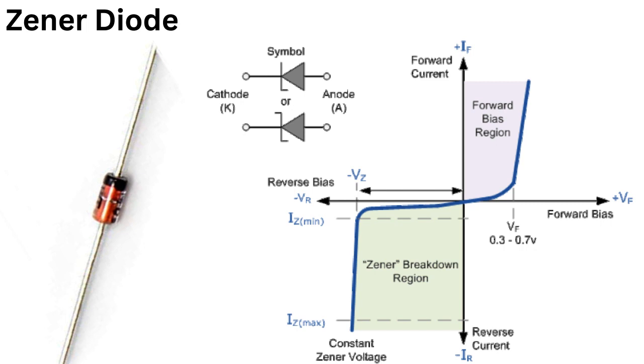A Zener diode is a type of diode designed to operate in the reverse breakdown region, also known as the Zener region. This allows the diode to maintain a constant voltage across it, regardless of the current flowing through it. This is known as the Zener effect.